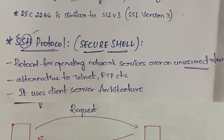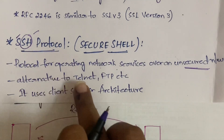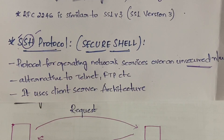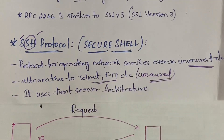Basically, SSH is a protocol for operating network services over an unsecured network. Even on unsecured networks where our data may be at risk, we can access services securely with the help of this Secure Shell Protocol. It is an alternative to Telnet, FTP, SMTP, and other protocols because those are not as secured when compared to SSH.